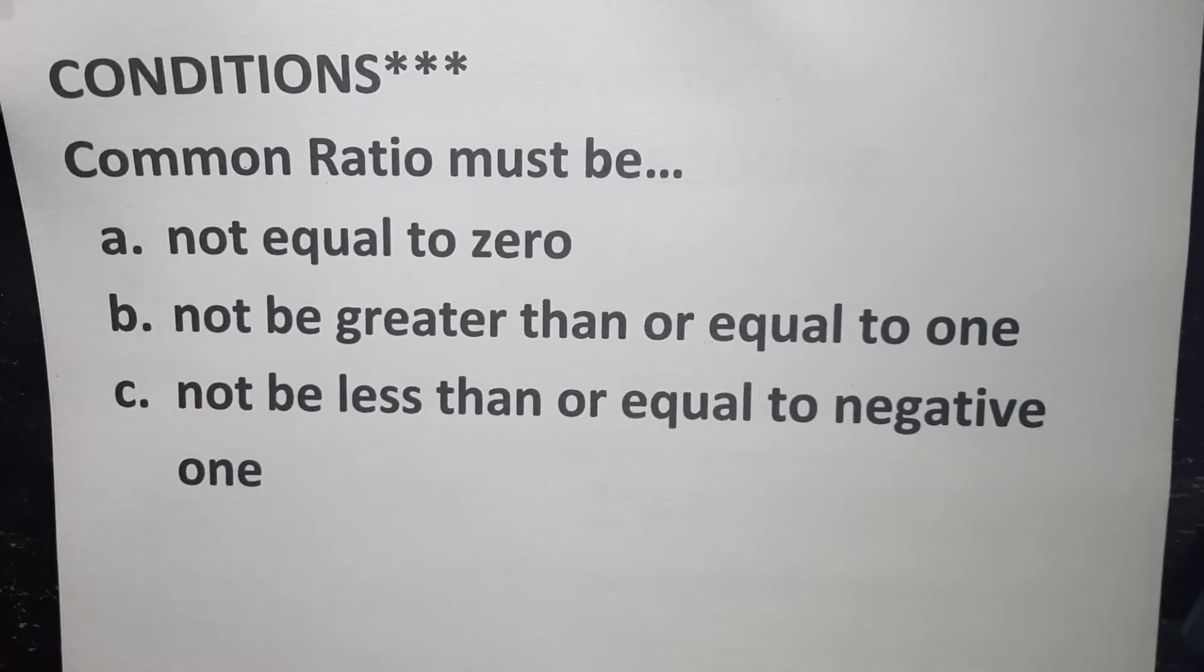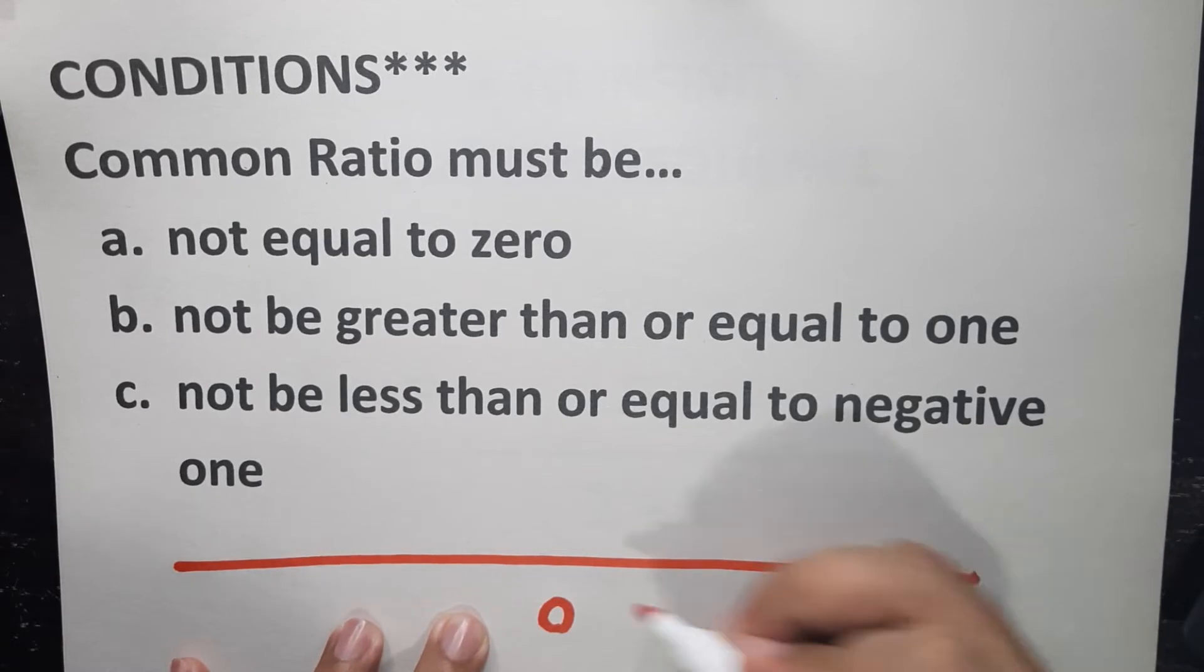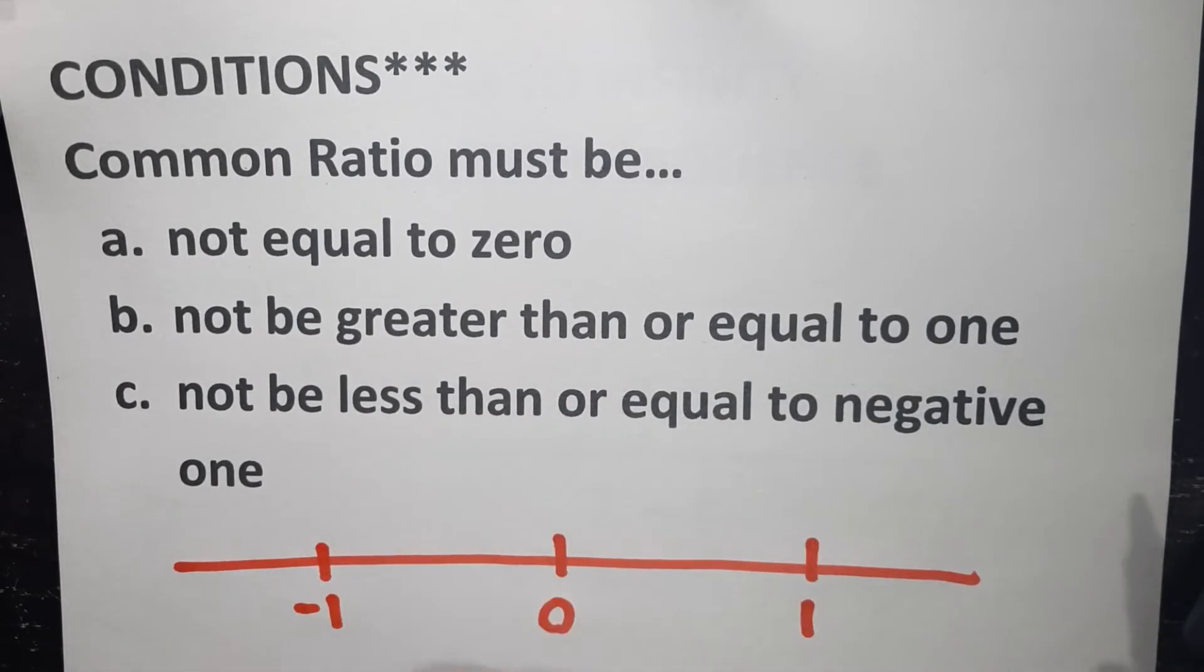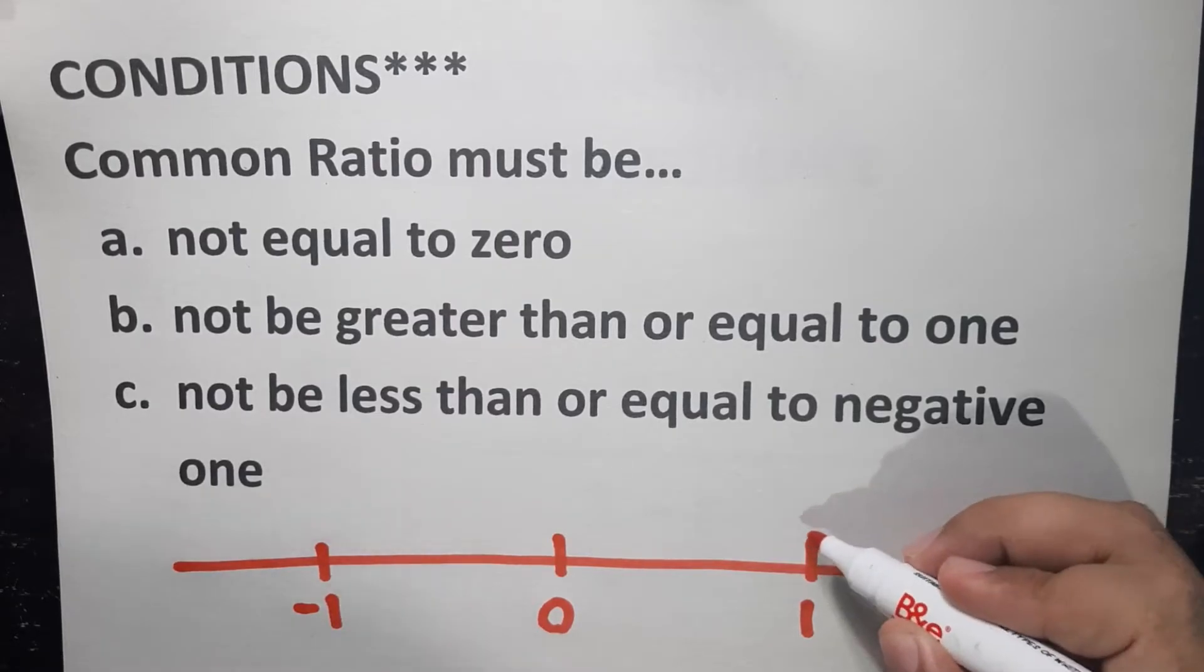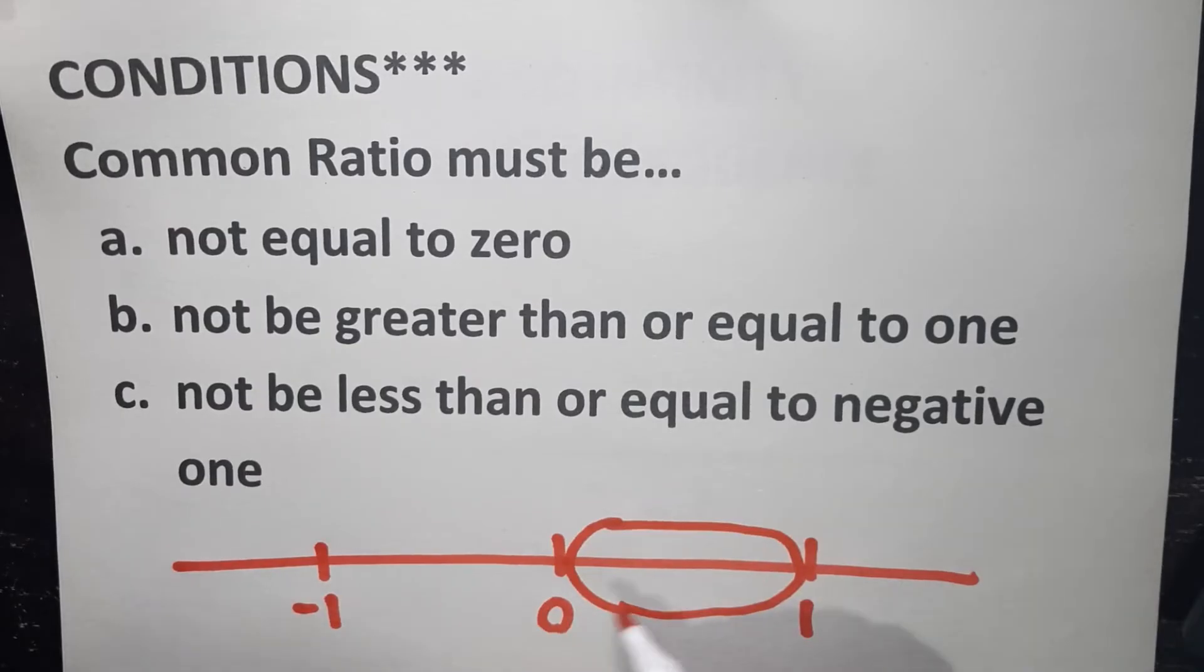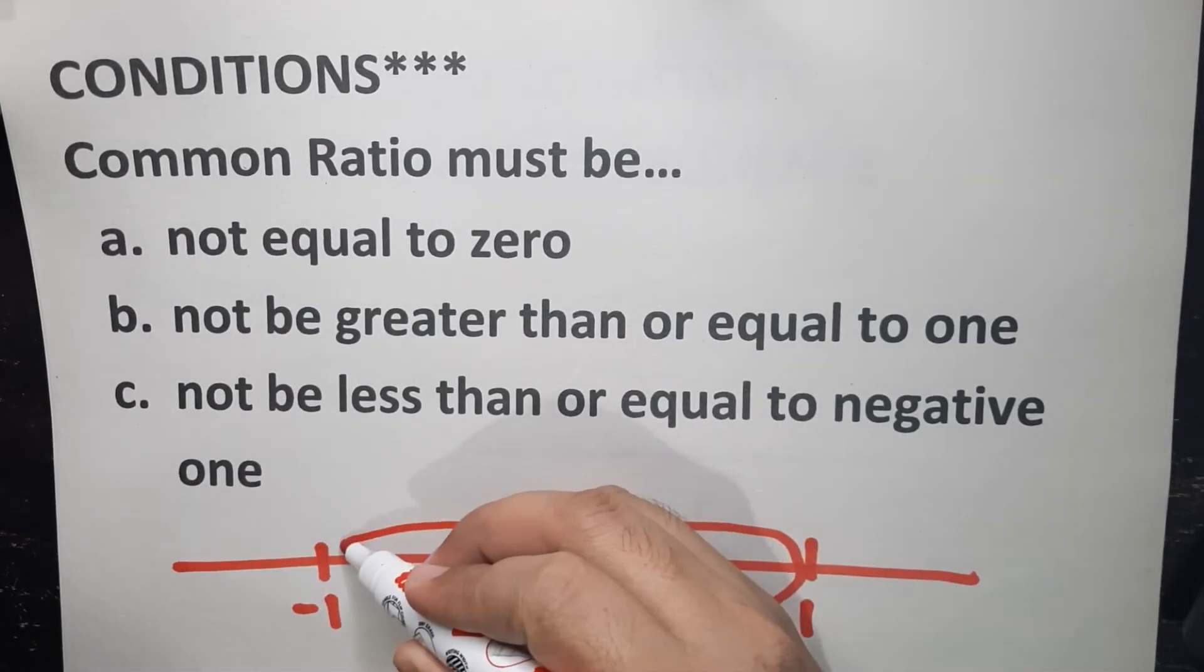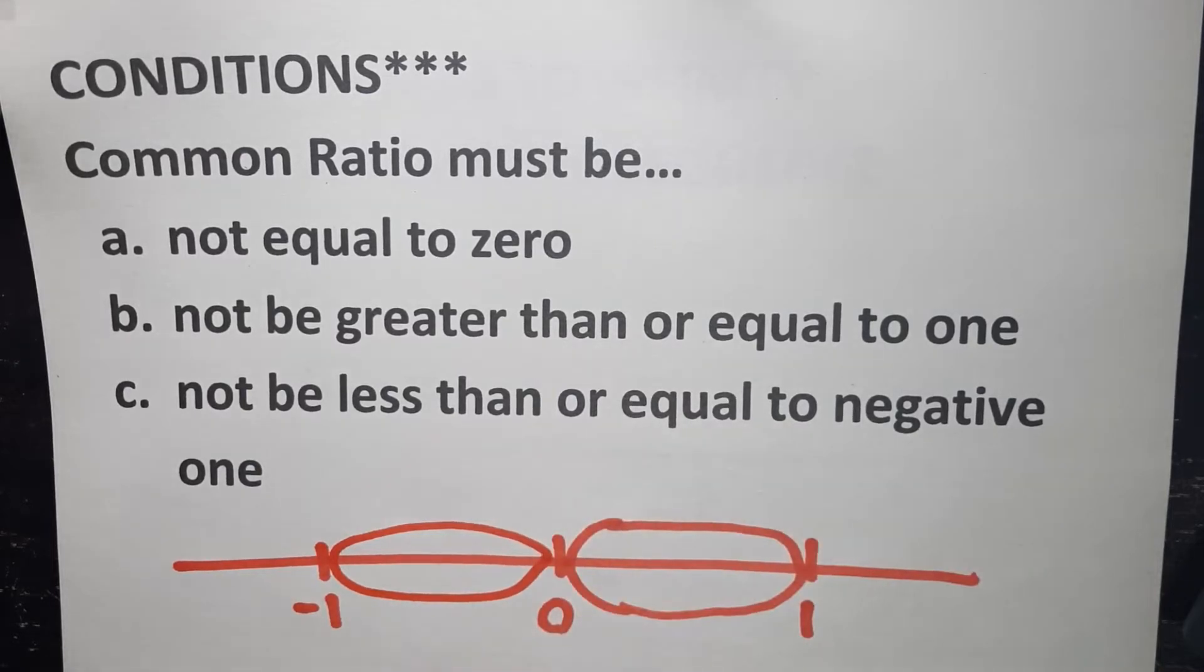It must be between 0 and 1. For letter C, not be less than or equal to negative 1. So on the left side of the number line, it is also the same. Because if you look at the number line, this is 0, this is 1, and this is negative 1. So for positive 1, this is not allowed. So which means, 0 is also not allowed. So all the possible common ratio must be between them, but not 0 and 1. For the left side of the number line, you cannot also negative 1 and any value lesser than that. So it must be between 0 and negative 1. Again, these are the fractional terms or the decimal terms.